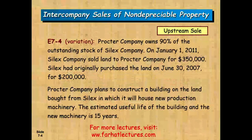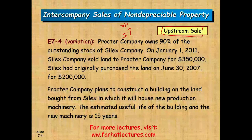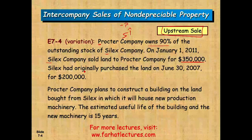This topic is straightforward, but understand it well before moving to depreciable property. We're going to look at an upstream sale — when the subsidiary sells to the parent; it's going upward. P Company owns 90% of the outstanding stock of S Company. On January 1st, 2011, S Company sold land to P Company for $350,000. S Company had originally purchased the land on June 30th, 2007 for $200,000.